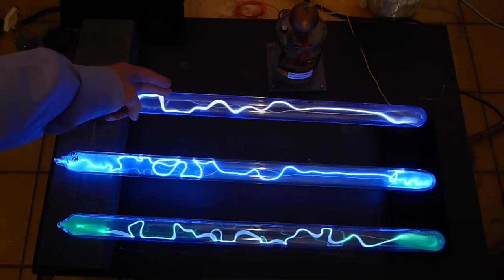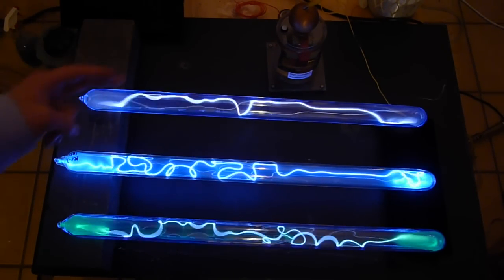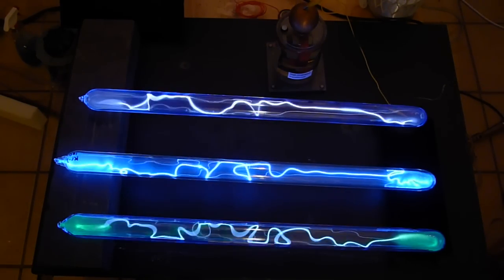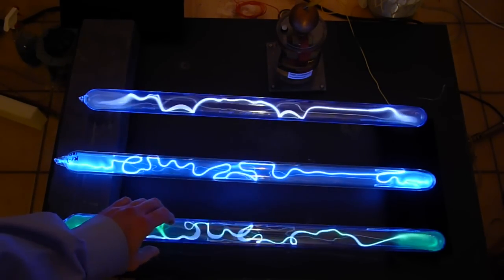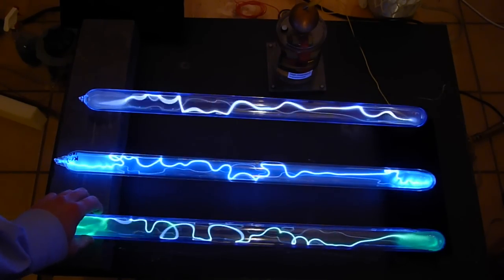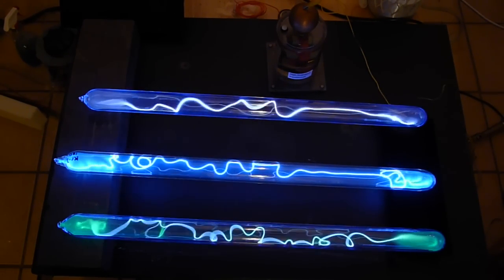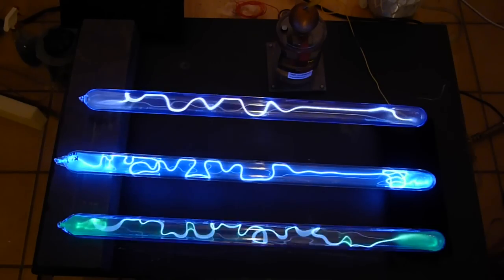So pure krypton 200 torr, krypton with iodine at 100 torr. The bottom tube with this nice green filament in it is xenon gas, pure xenon, at a pressure of only 30 torr.